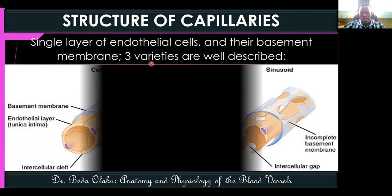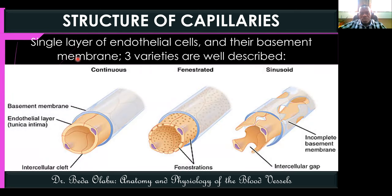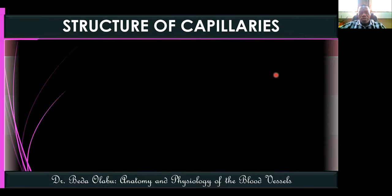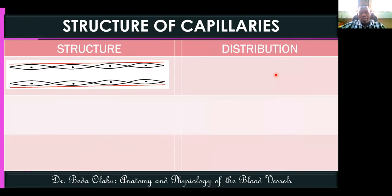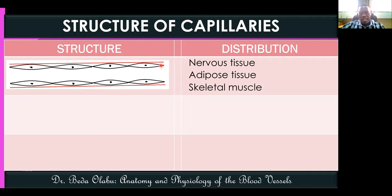There are three histological types of capillaries: continuous capillaries, fenestrated capillaries, and sinusoidal capillaries. Continuous capillaries have an intact basement membrane throughout and endothelial cells attached to each other. They are found in the nervous system, adipose tissue, and skeletal muscles.